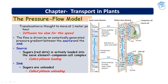Sucrose moves from the companion cell to the sieve tube element by active transport, meaning it requires expenditure of energy. This process of loading at the source produces a hypertonic condition in the phloem. When sucrose is transported from the source cell to the companion cell and then to the sieve tube element, the phloem becomes hypertonic, and water in the adjacent xylem moves into the phloem by osmosis. As osmotic pressure builds up, the phloem sap will move to areas of lower pressure.